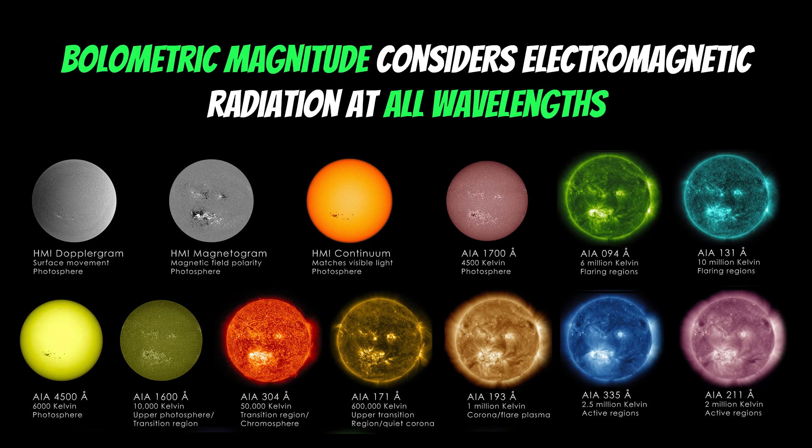But the bolometric magnitude considers the electromagnetic radiation at all wavelengths. So it's not just whatever your camera's detected, what your eyes are detected. It considers all electromagnetic radiation at all wavelengths, because these objects are emitting across a very broad spectrum.